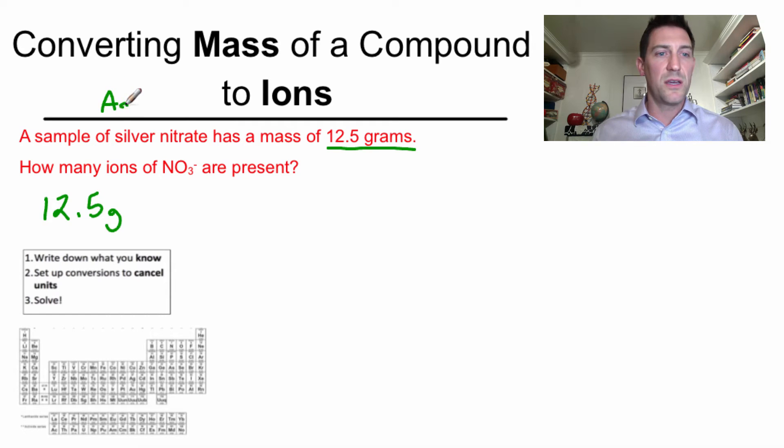I'm going to write the 12.5 grams. And I need to remember what silver nitrate is. Silver is Ag. And nitrate, when I look on the periodic table, unless you have it memorized, is NO3. Silver's oxidation state is 1 plus. Nitrate is 1 minus, which means these two even each other out. Silver nitrate is going to be AgNO3. The game plan is no different than it's been the whole time. We just wrote down what we know. Now we need to set up conversions to cancel the units.